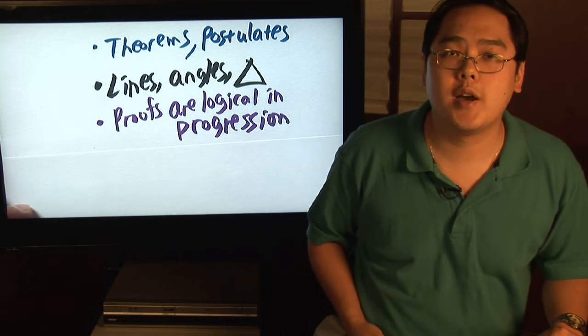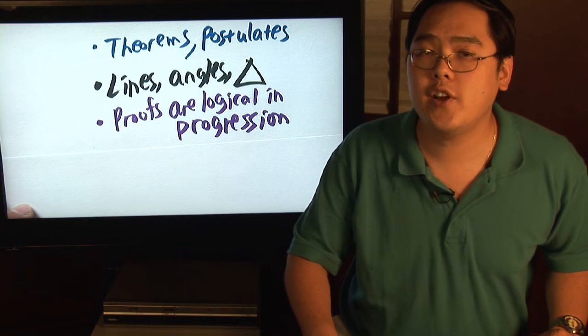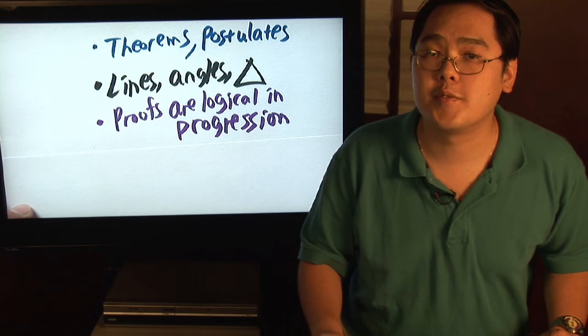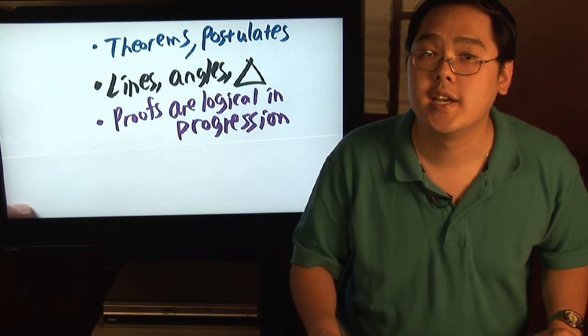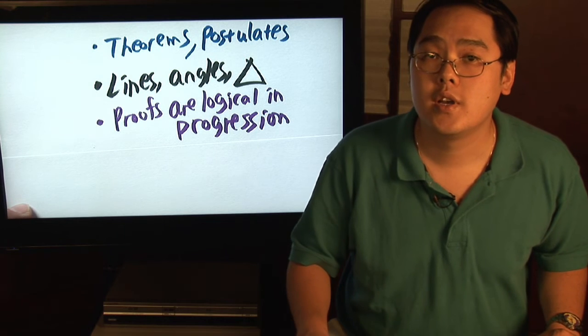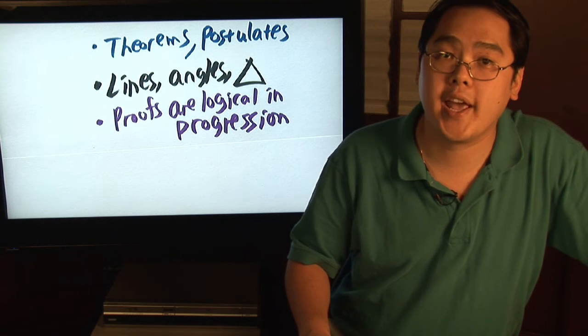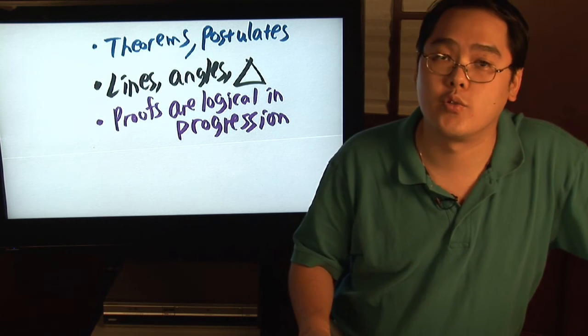Last but not least, when it comes to solving geometry proofs, make sure that your proofs are logical in progression. It is very easy to go from the given to the end of the proof too quickly because you may not cover every part that's needed. If you want to prove two triangles are congruent, for example, you can't just stop with one side or one angle. You have to be sure that all the parts are congruent.